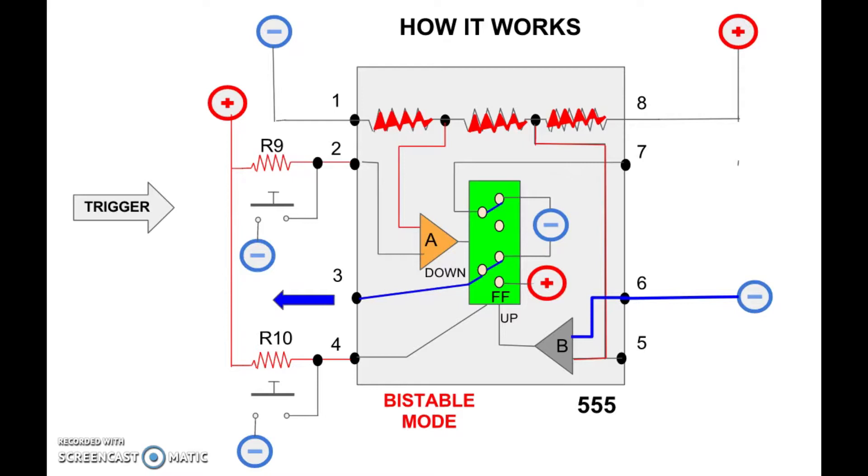Let's trigger it and see what happens. We start from the up position. R9 is a pull-up resistor.